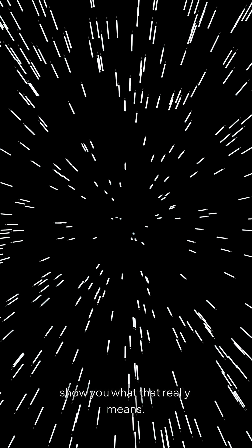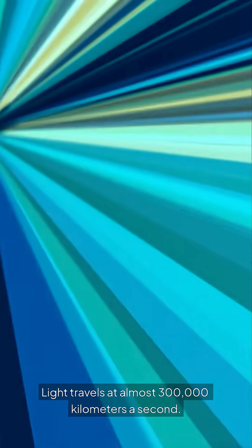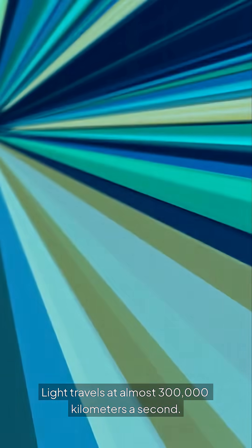The speed of light is the fastest thing in the universe, but let me show you what that really means. Light travels at almost 300,000 kilometers a second.